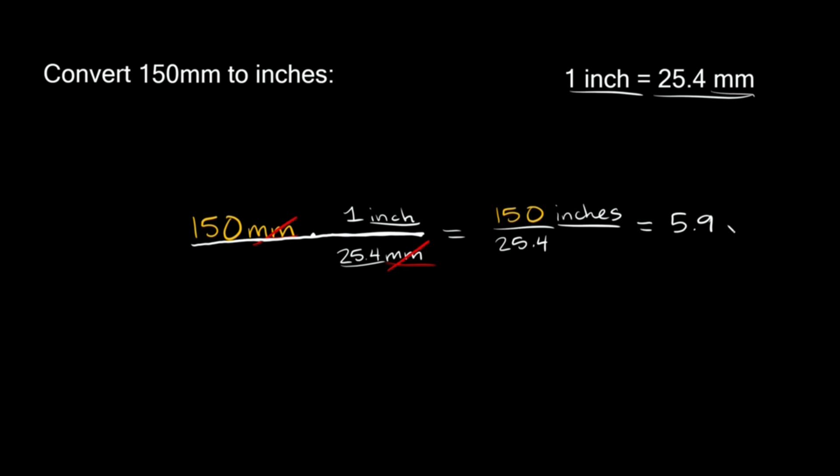And we still have our units, inches. So 150 millimeters is approximately 5.9 inches.